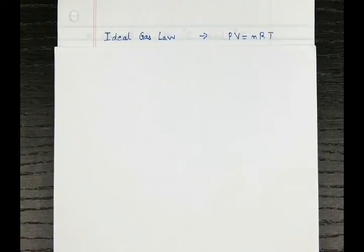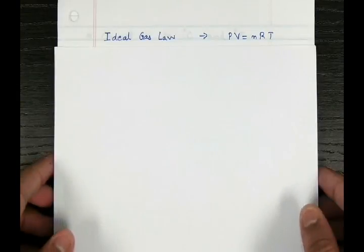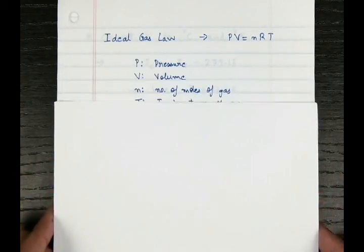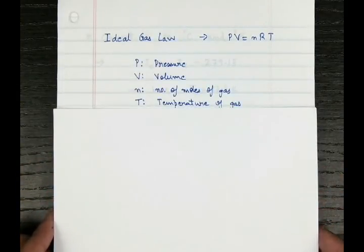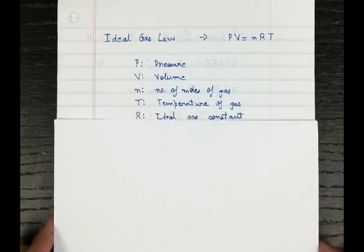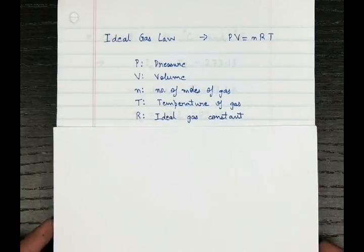We will have a look at the ideal gas law, which for any ideal gas is PV equals nRT. P is the pressure, V is the volume, n is the number of moles of gas, T is the temperature of the gas, and R is a constant which we call the ideal gas constant.